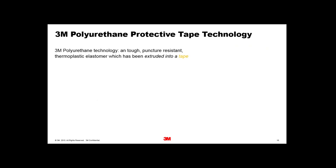Moving on to tape: 3M's polyurethane technology is a tough, puncture-resistant elastomer extruded into tapes. One key benefit of tape over a spraying system is you have a uniform caliper and weight. Each rotor blade or fan blade fitted with the same tape cut to the same size will have the same mass, and therefore you don't have as much of a balance issue between individual blades.